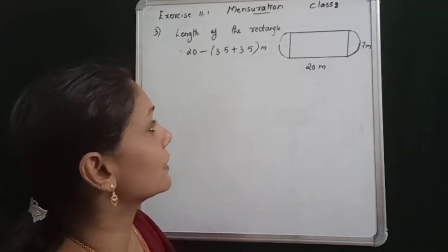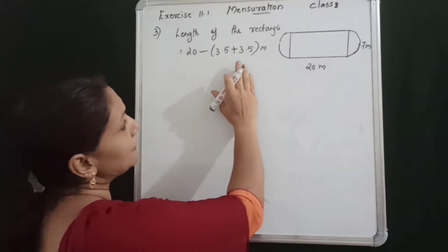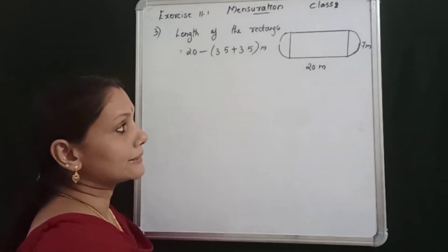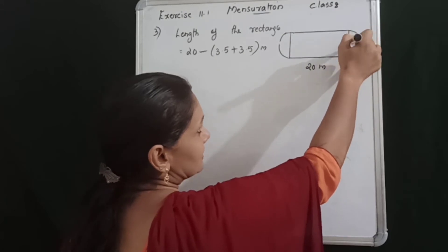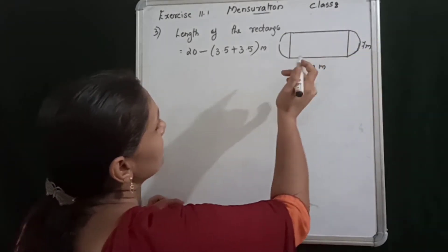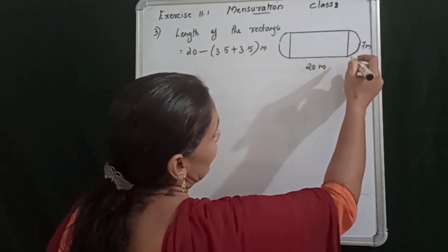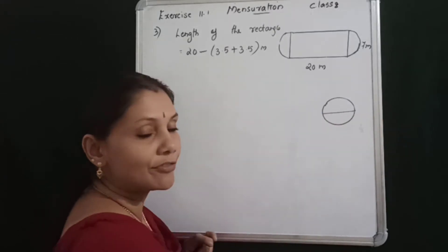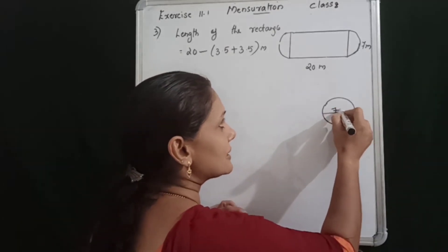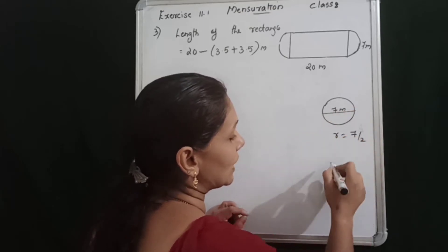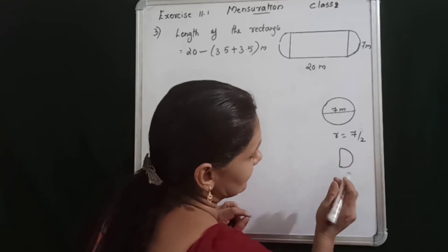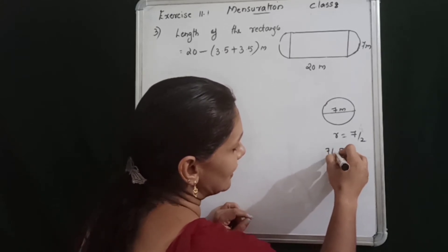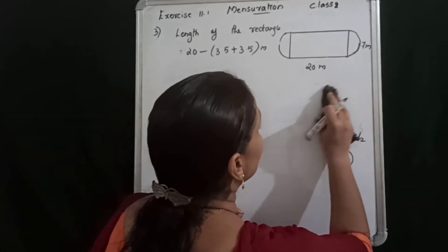Find the area and perimeter of this garden. The length of the rectangle is 20 minus 3.5 plus 3.5, giving a length of 13. The semicircle at the ends has diameter 7, so radius equals 7 by 2, which is 3.5 meters.